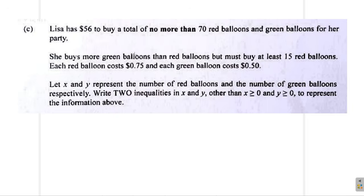She buys more green than red. What is it? X or red in more green than red. That means Y is green. So Y is greater than X. The number of green is greater than number of red.